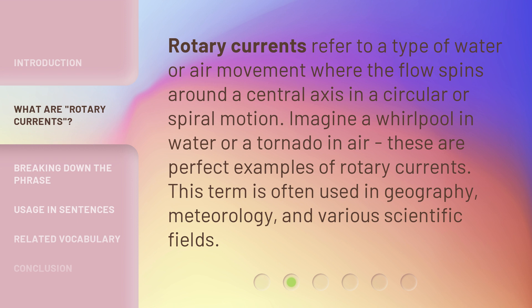Rotary Currents refer to a type of water or air movement where the flow spins around a central axis in a circular or spiral motion. Imagine a whirlpool in water or a tornado in air — these are perfect examples of Rotary Currents. This term is often used in geography, meteorology, and various scientific fields.